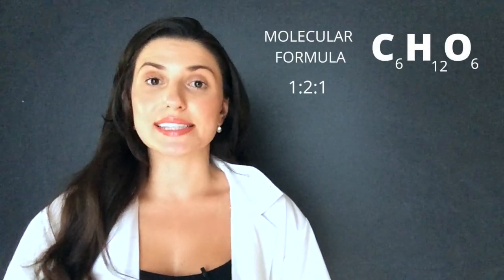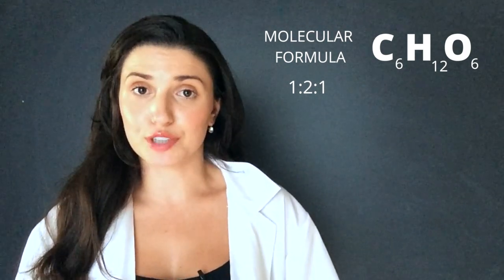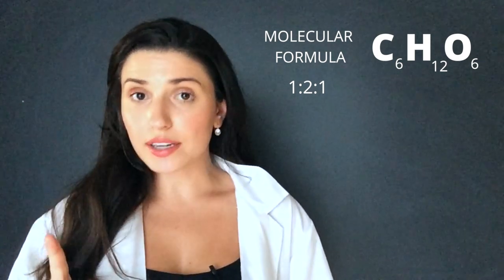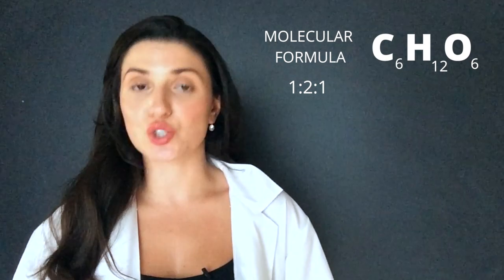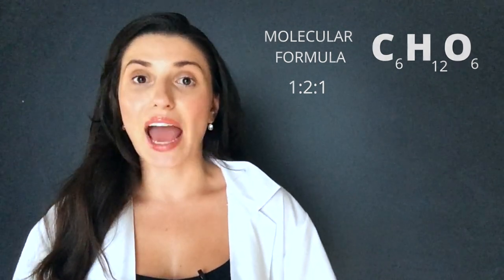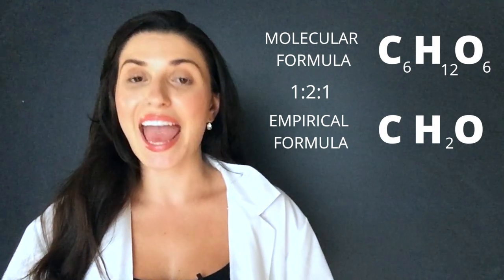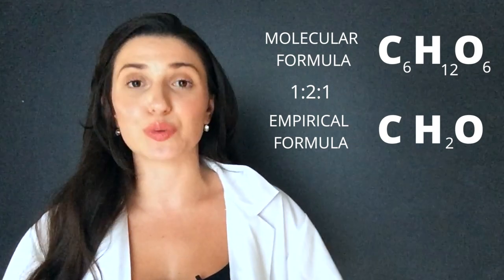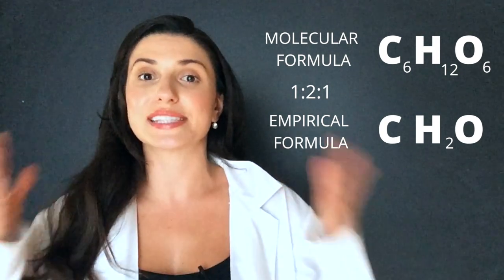Glucose is C6H12O6. That is the molecular formula for glucose. If you look at the ratios of the atoms it's one carbon to two hydrogen to one oxygen. So one two one. Now the empirical formula for glucose would be CH2O. It's the most simplified version and the ratio there is one two one. Remember that they will both have the same ratio.